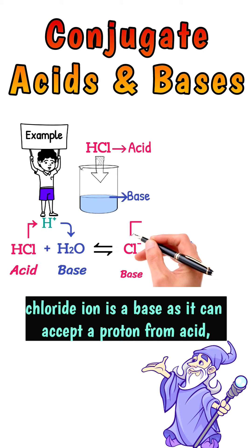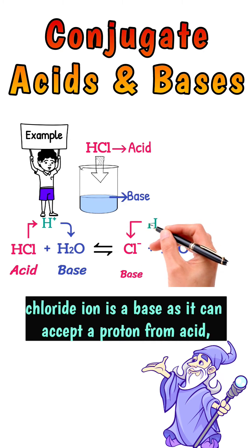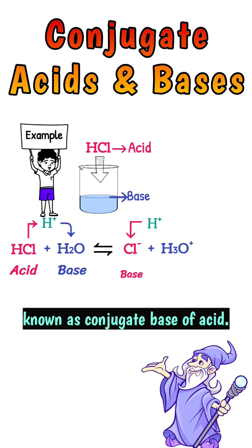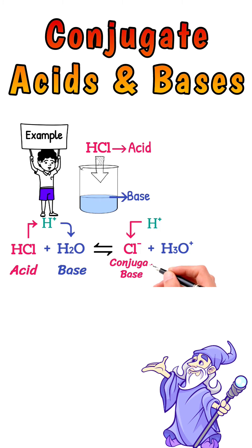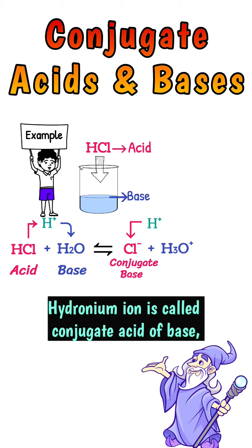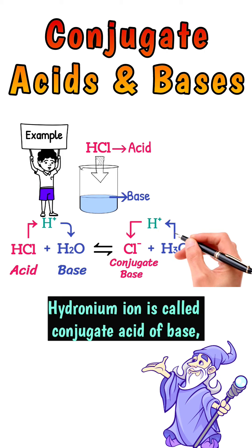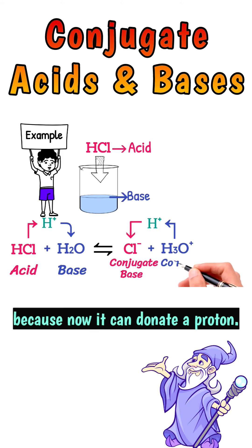In the reverse reaction, HCl is a base, as it can accept a proton from the acid, known as the conjugate base of the acid. Hydronium ion is called the conjugate acid of the base, because now it can donate a proton.